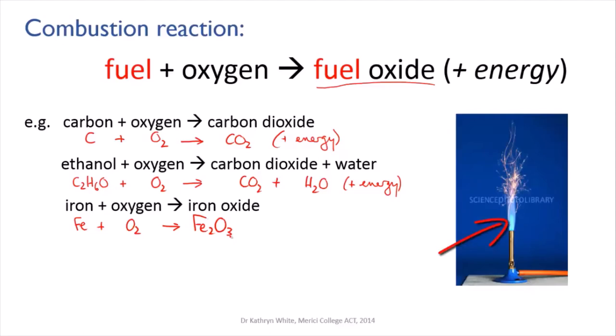The other combustion reaction that's going on in this photograph is what's powering the Bunsen burner, the combustion of gas, probably a mixture of methane and other similar carbon-based molecules. They are also combusting to produce carbon dioxide and water.